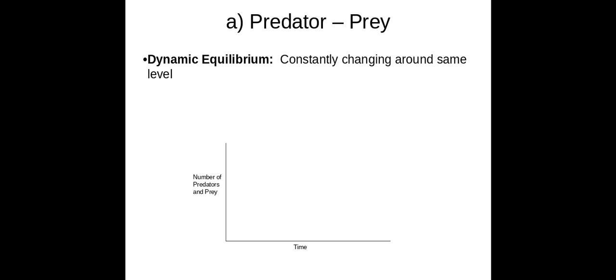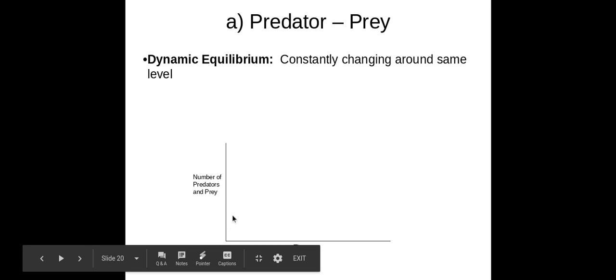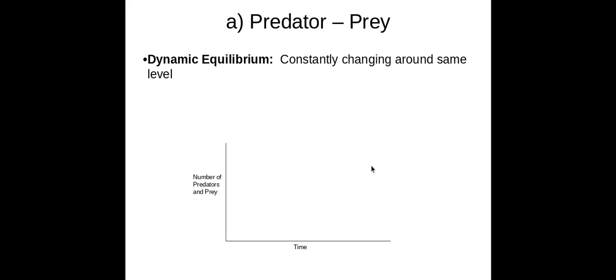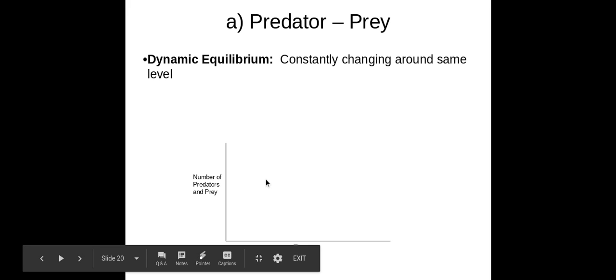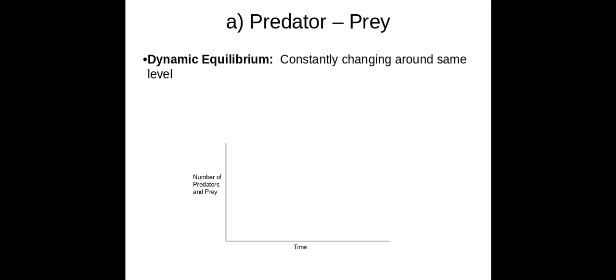We've talked extensively about predator-prey dynamics and dynamic equilibrium. In a typical ecosystem, the predator and prey populations oscillate around a carrying capacity line. As the prey population increases, the predator population increases, which causes prey population to go down; then predators don't have food, so their population goes down, and the cycle continues.